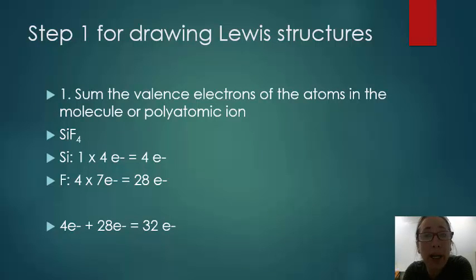Let's just go ahead and look at the rules for drawing a Lewis dot structure, and we'll look at an example as we go through these rules. The first thing you want to do is sum the valence electrons of the atoms in the molecule or polyatomic ion. This is a molecule, there's no charge, so that's how we know it's a molecule. It's silicon tetrafluoride, and there's one silicon and four fluorine.